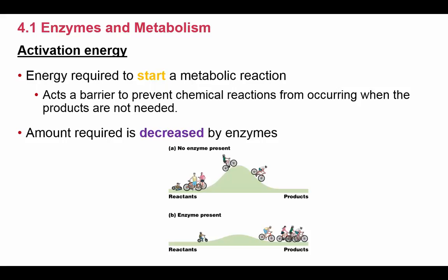What's good about this level of energy is that it acts as a barrier to prevent chemical reactions from occurring when you don't need the products. Because there is this barrier, chemical reactions don't just always happen — we have to reach this level in order to trigger them to start. What enzymes do is they take this level of energy that must be reached to start a reaction and decrease that amount of energy. By decreasing it, it allows us to reach that level faster, which speeds up the reaction.